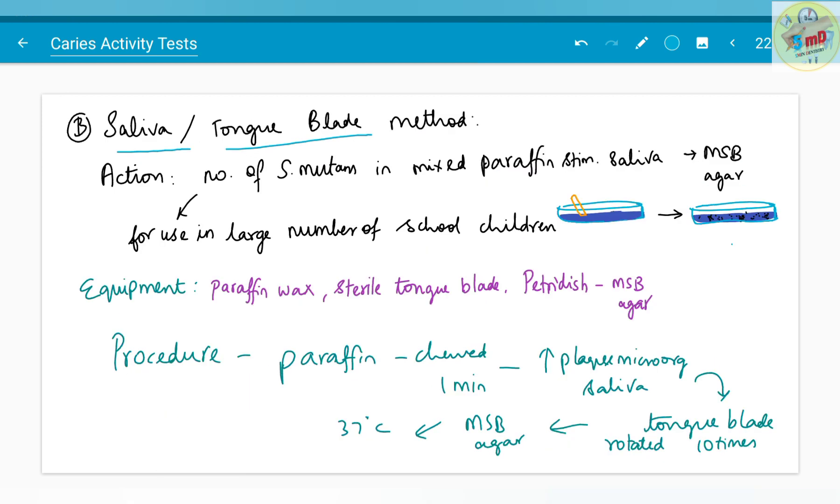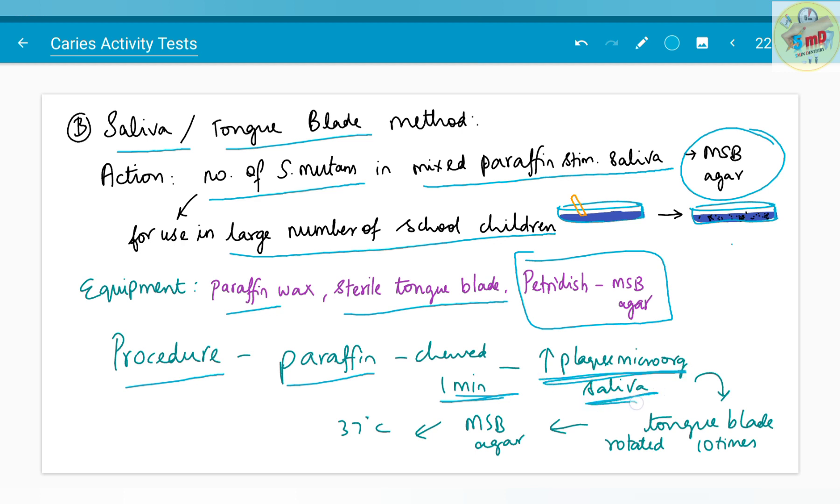The second method, the action is as follows: number of streptococcus mutans in mixed paraffin stimulated saliva is incubated in MSB agar. It is useful in large number of school children. It is more easier than the toothpick method. Equipment required here include paraffin wax, sterile tongue blade, petri dish with MSB agar. The procedure here is the paraffin is chewed for one minute, which will increase the plaque microorganisms presence in saliva, and after which the tongue blade is rotated for 10 times.